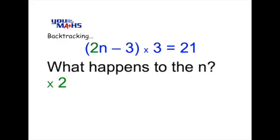And then because we've got 2n minus 3 in brackets, the next thing we do is subtract 3 from that initial result. And the last thing that we're going to do is multiply by 3 so that the answer equals 21.